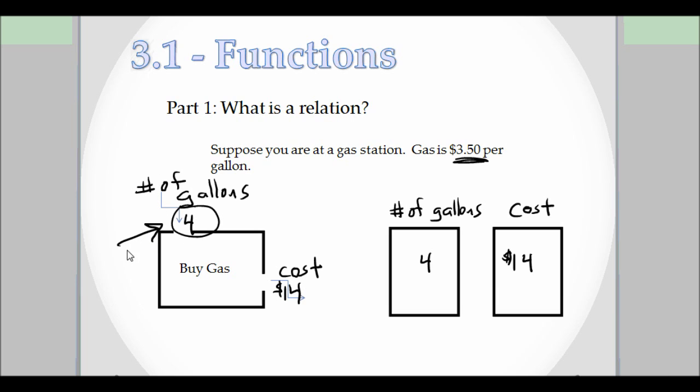Now another thing to consider is what we're plugging into our box is our input. And what we're getting out, which hopefully you can guess, is the output. So input is number of gallons, output is the cost.